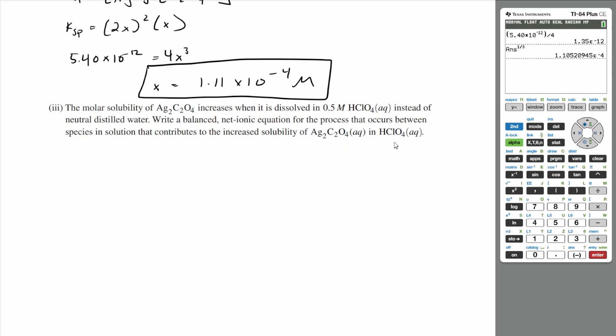So if you look at how your silver oxalate dissociates, it's going to dissociate into two silver ions, and it's going to dissociate into an oxalate ion. But this doesn't happen a lot.